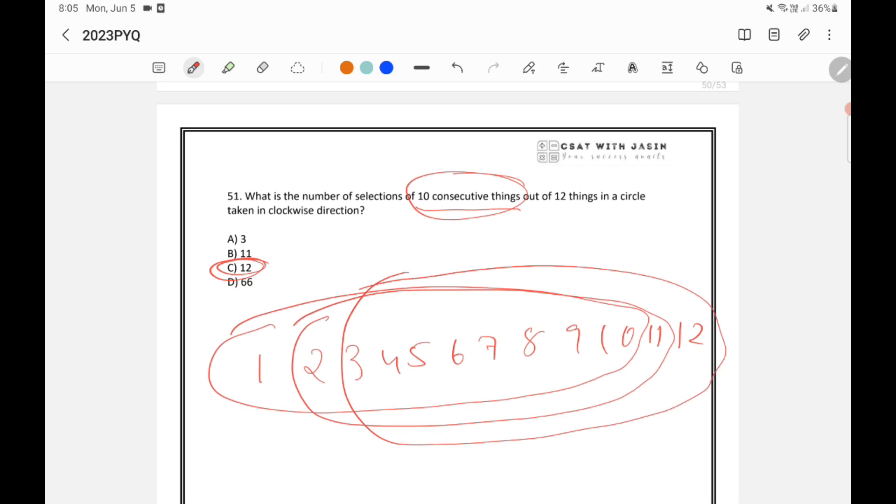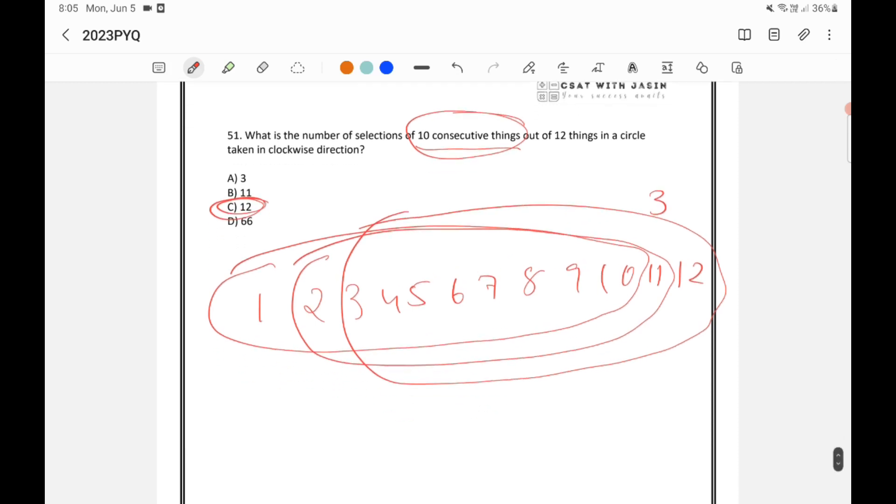Since the earlier one, it was a circle. I can go more and more, but here it is in a row. I can stop here. So 3 was the right answer. If the things were not in a circle, if it was in a row. So here also, there is a trick for that. If you want to select m things, m consecutive things out of n things in a row, the answer is n minus m plus 1. So in this case, it was 12 minus 10 plus 1. It is 3.